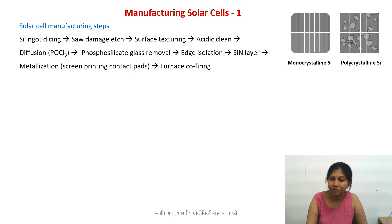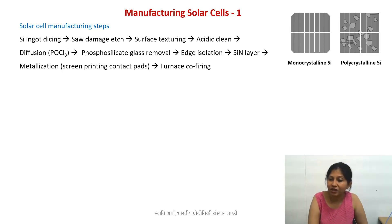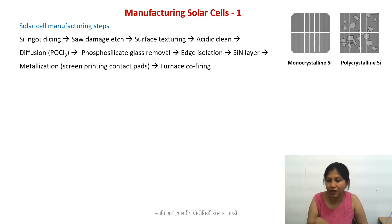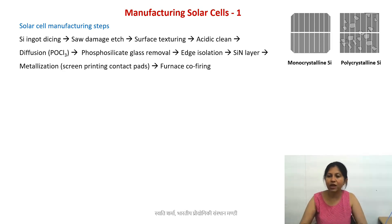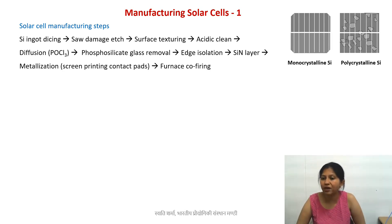After removing the phosphosilicate glass, you do edge isolation, then deposit or pattern the silicon nitride layer, followed by metallization — patterning the electrodes or contact pads. Typically silver on top and aluminum on the bottom, applied by screen printing. Finally, everything goes into a furnace for co-firing. Those are all the different manufacturing steps.